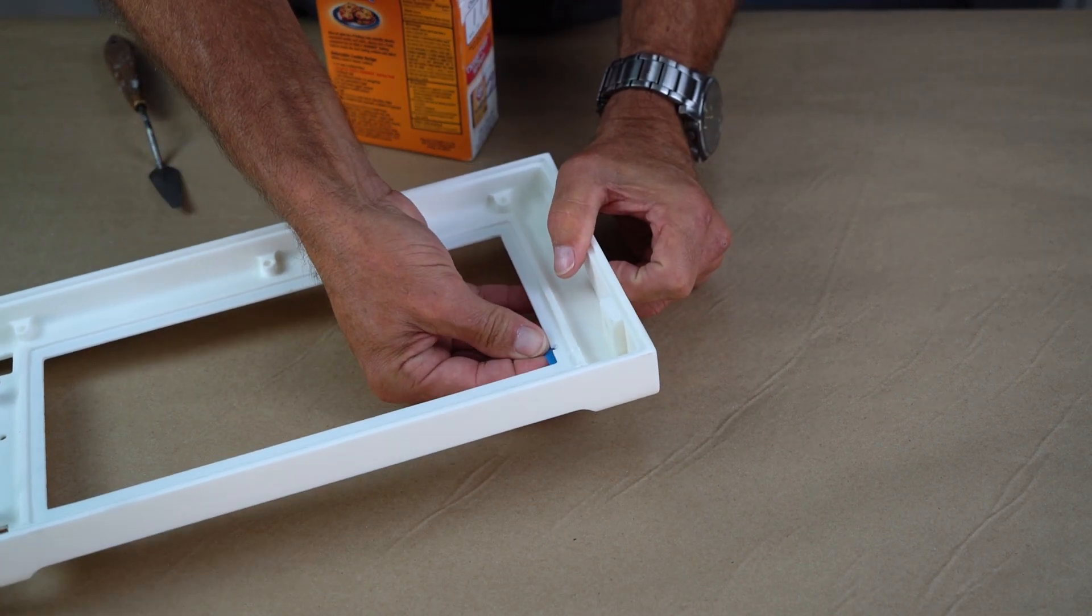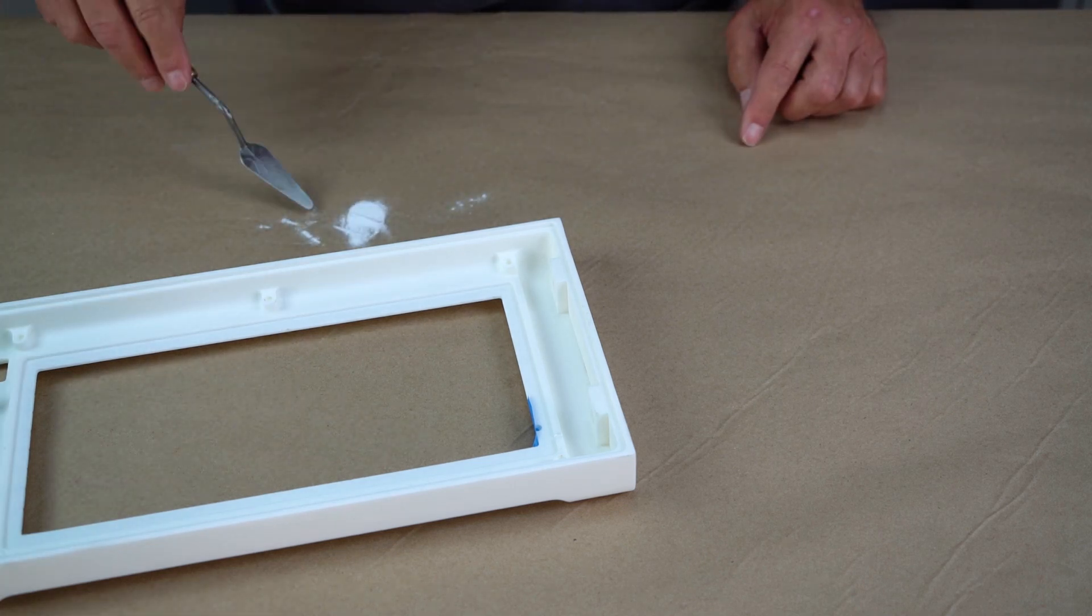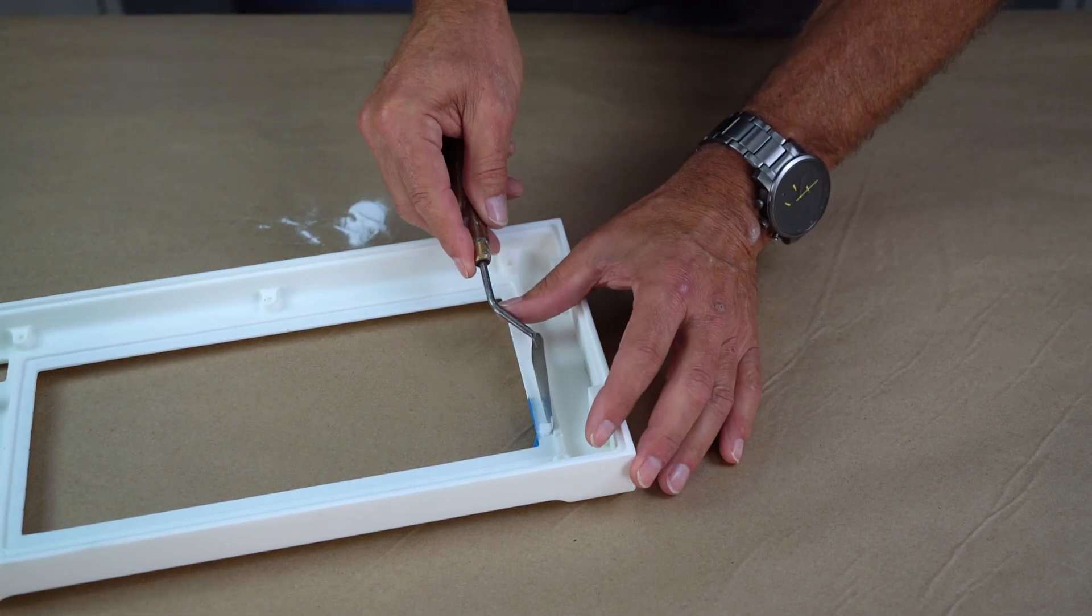First, I apply tape to the back side of the void. I then pack baking soda into the void and remove any excess baking soda from the area.